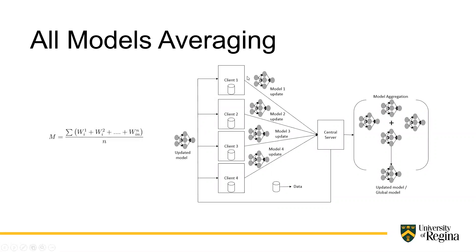The first aggregation technique is all-models averaging. The central server sends a dummy model; each client trains it, producing four models (model 1, 2, 3, 4); these come to the central server, which aggregates them using layer-wise model weights and biases averaging — each hidden layer from the four models is averaged together to create an upgraded model. This process is governed by an averaging equation and continues for four iterations.